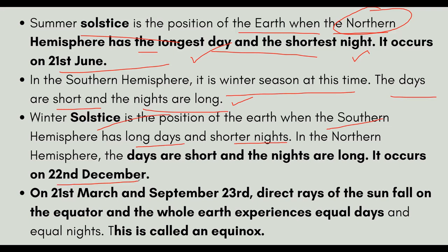On 21st March and 23rd September, there will be direct sun rays on the equator, and there will be equal day and equal night — 12 hours day and 12 hours night. We call this equinox. Equinox means equal.